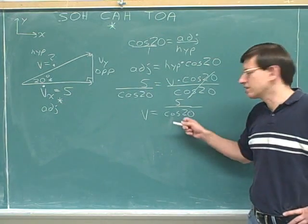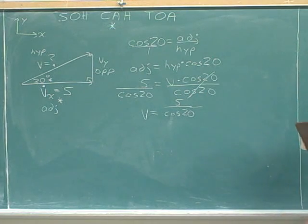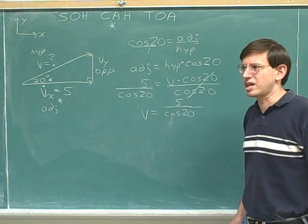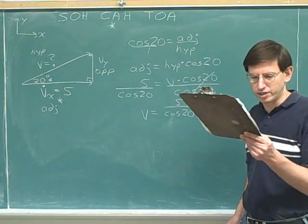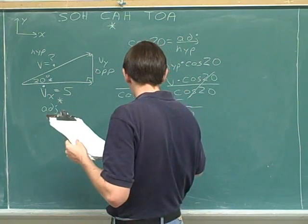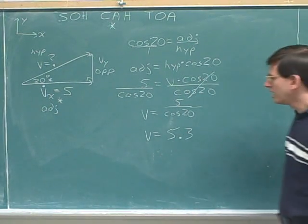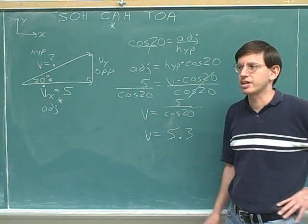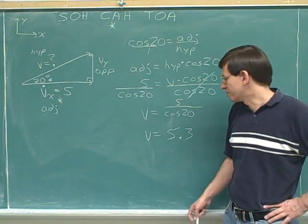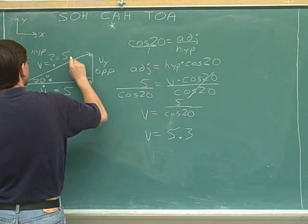Now we can get out our calculator. You can do this in just one step — just do 5 divided by cosine 20 directly on your scientific calculator without needing to find cosine 20 first and then divide separately. It's good to learn how to do things in one step on your calculator; on difficult problems it can save you from a lot of confusion. So 5 divided by cosine 20 gives approximately 5.3. V equals approximately 5.3. There's no sign on this because it represents the overall vector magnitude. If this were a velocity, it would be 5.3 meters per second.